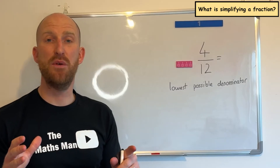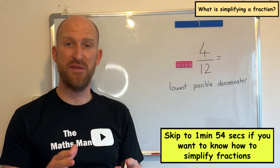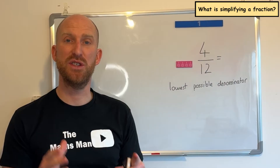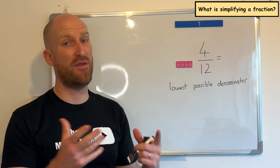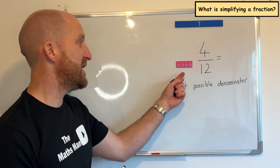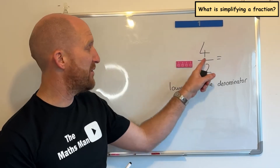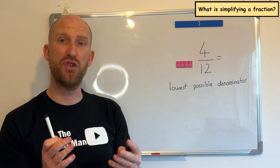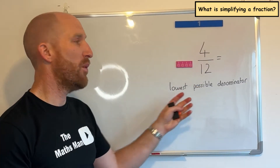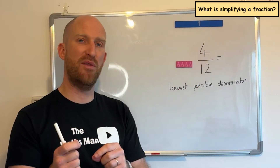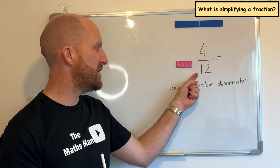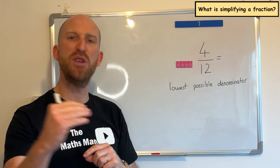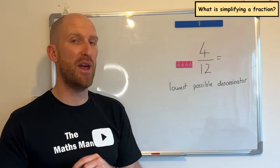Before I share with you the method for simplifying any fraction, we're first going to recap what exactly does simplifying a fraction mean. As you can see here on the board I've got the fraction 4 twelfths and we're going to try and simplify that. When we're simplifying, what we're trying to do is change the denominator into the lowest possible number that we can.